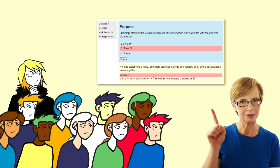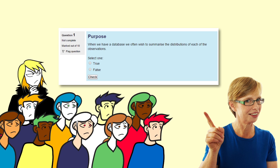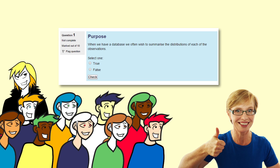Sometimes it is good to give the wrong answer. This helps to uncover misconceptions and models reading the explanation for the students. The statement says: 'When we have a database, we often wish to summarise the distributions of each of the observations.' That sounds plausible, so we select true.